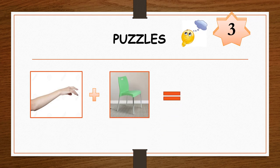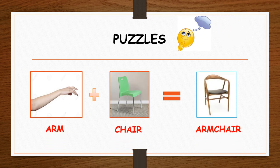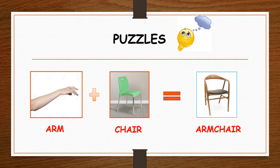I think it's a bit tricky. Arm and chill make armchill.